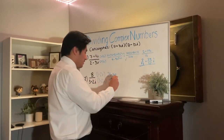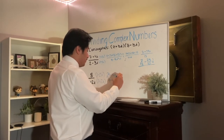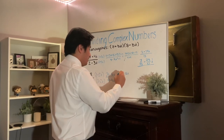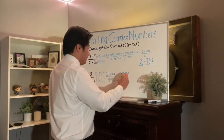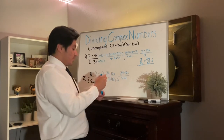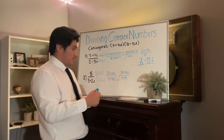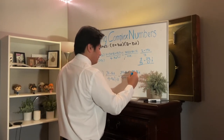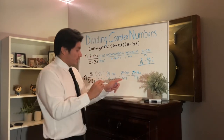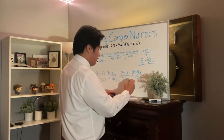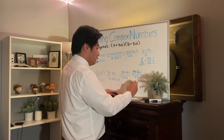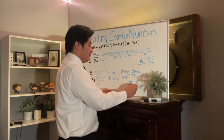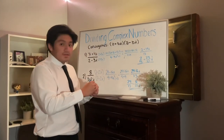We rewrite it as 24 minus 16i over 9 plus 4, which gives us 24 minus 16i over 13. Breaking that apart and simplifying: that's going to be 24 over 13 minus 16 over 13 i, and that's your final answer for the second equation.